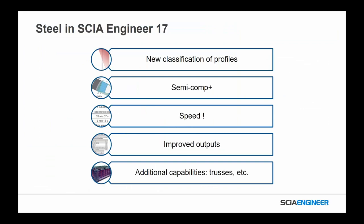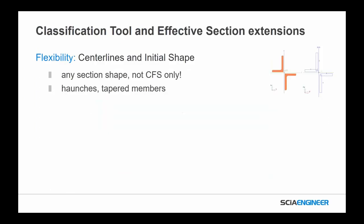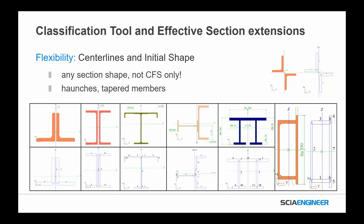In addition to improvements in concrete, we also had a bunch of improvements in steel. The first is this classification tool and effective section extensions — the flexibility to calculate for any section the center line and initial shape. Not just for CFS or cold-form shapes, but for any section shape including haunch or tapered members. Different member types, including double shapes like double angles, channels, or an I-shape with a channel on top, can all be calculated for classification and effective section properties.